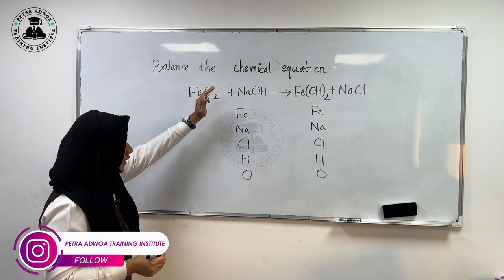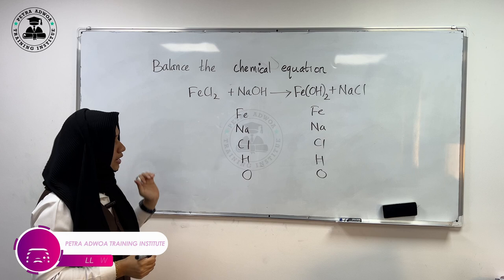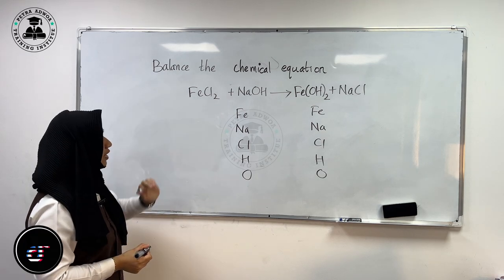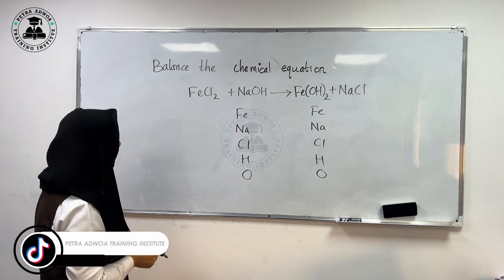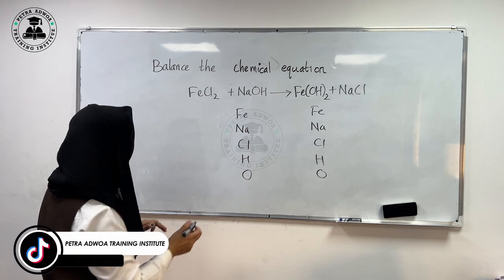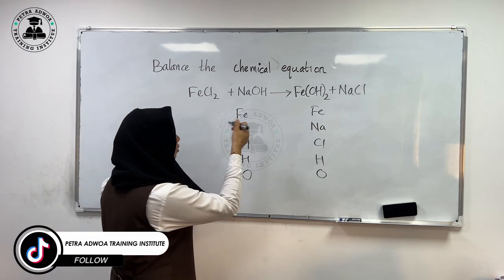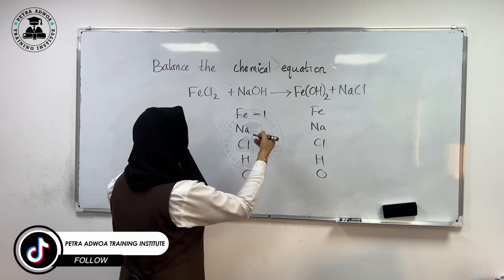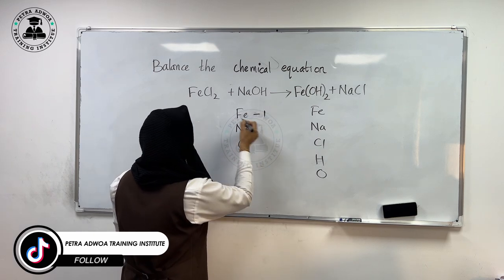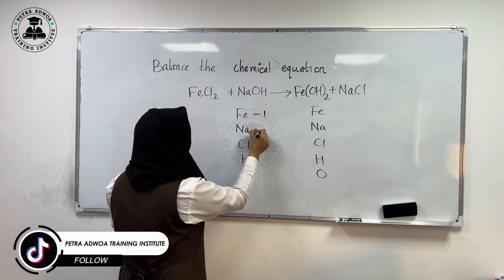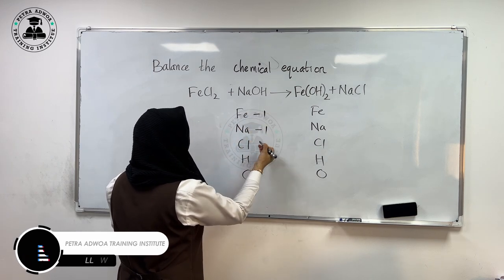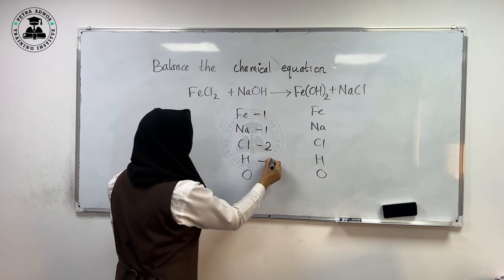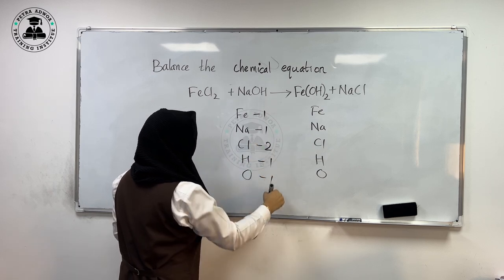First, list out the elements present in the chemical reaction. Now we have to look at how many atoms are present. On the left hand side: iron is 1, sodium is also 1, chlorine is 2, hydrogen is 1, and oxygen is 1.